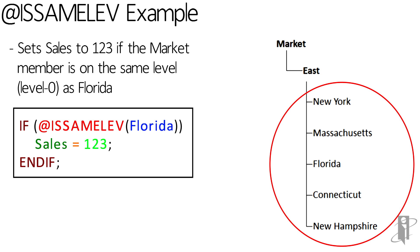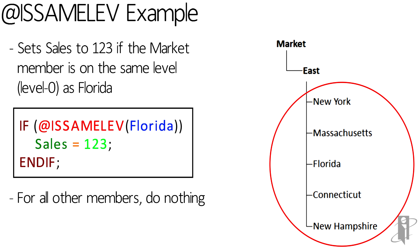Notice we don't have an else if clause, so for any other levels in the outline — such as the regions East, West, South, Central, or Total Market — it's not going to do anything. It's going to leave sales equal to whatever it was before we started this.